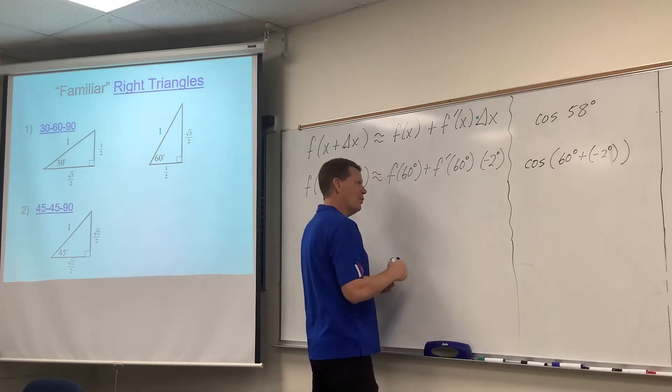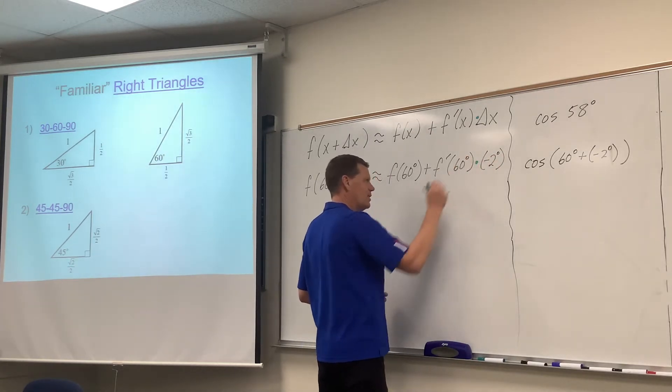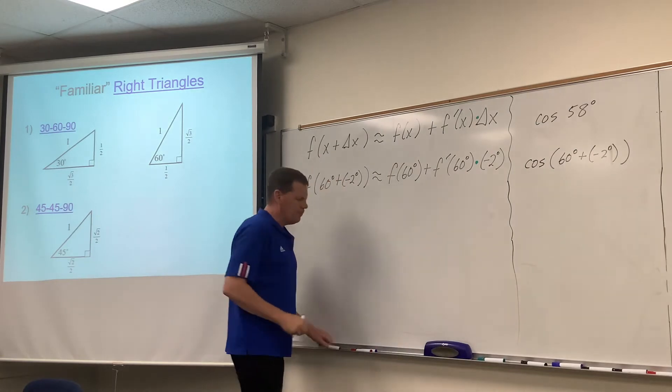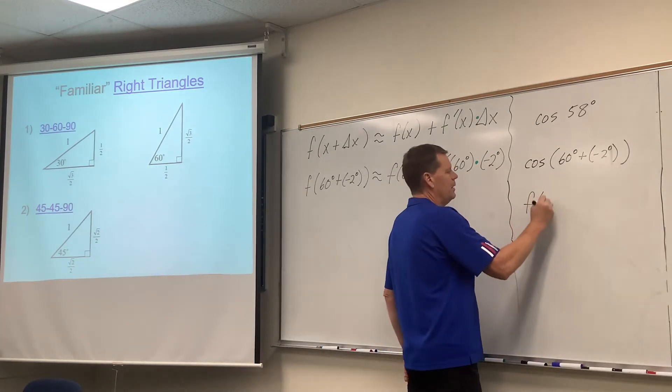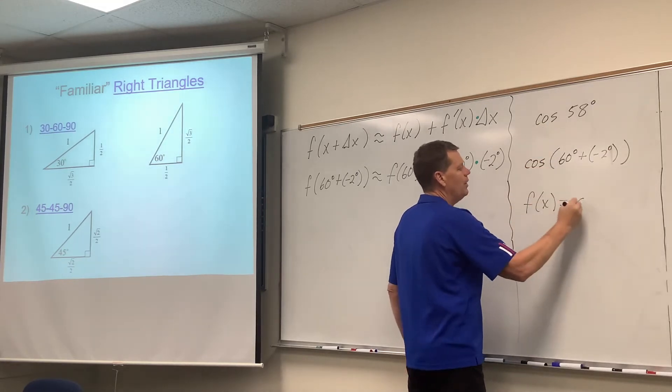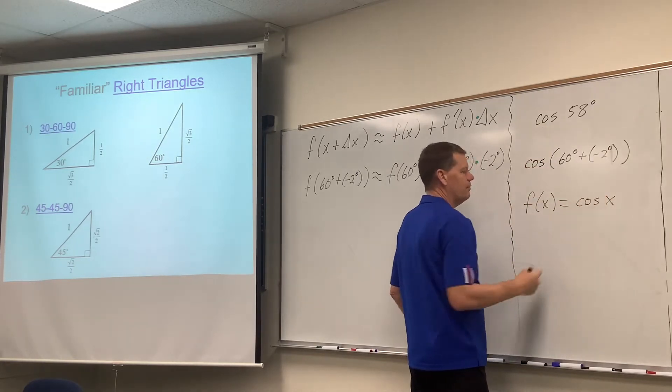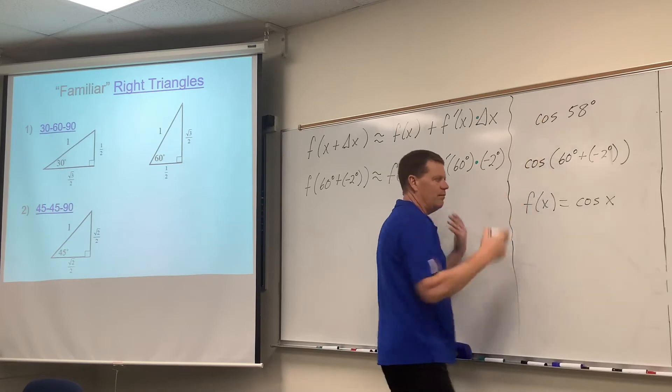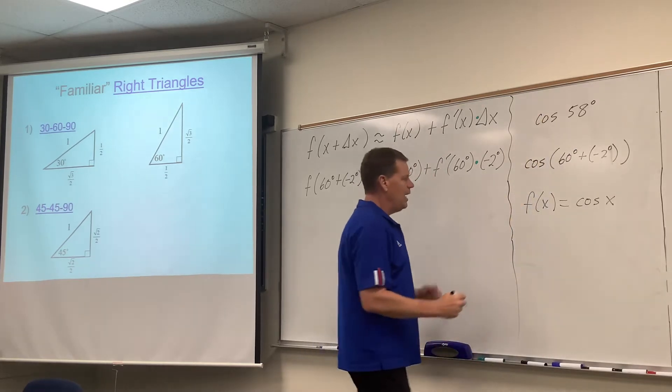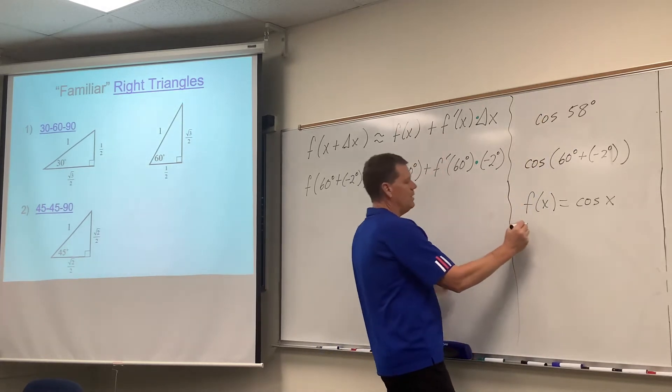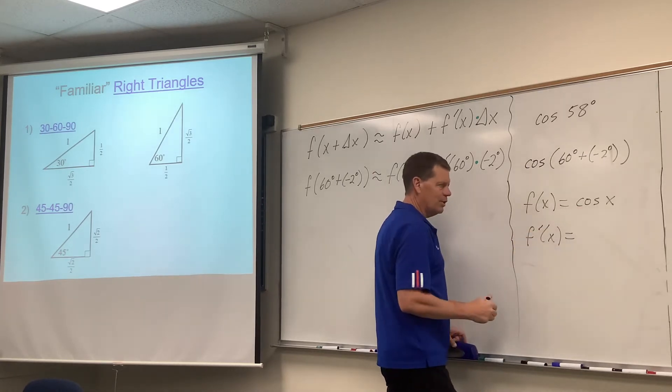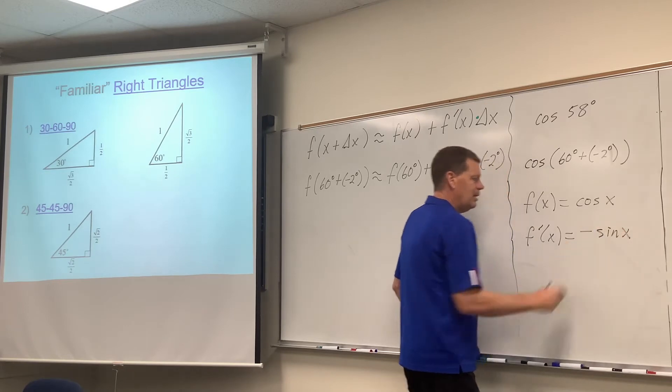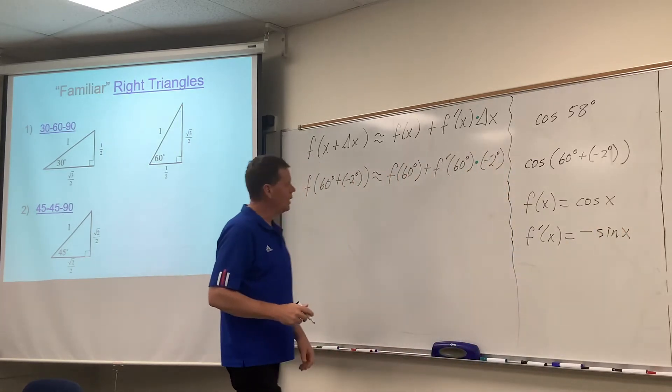Now we're going to talk about this in a minute, about the negative 2 degrees in particular. So what's the f? Well the f is the original, the cosine x. That's the function that we're taking the cosine of a number. And then the f prime that we need, we take the derivative of whatever that function is, negative sine x, and we're off and running.